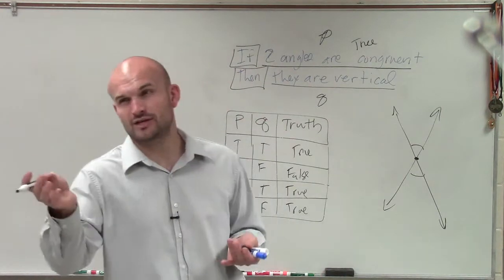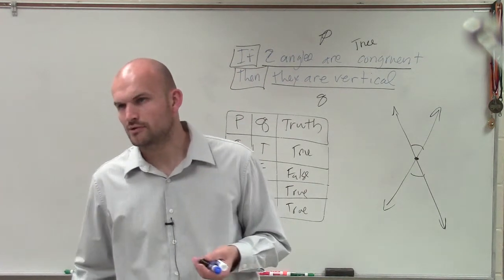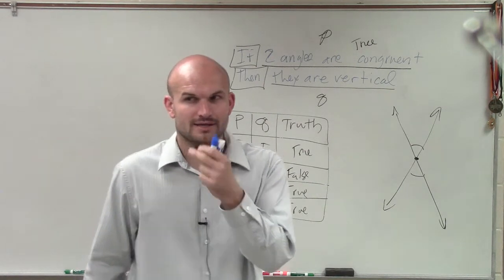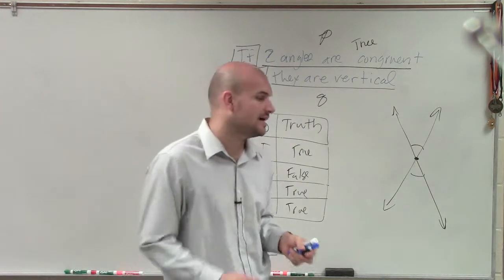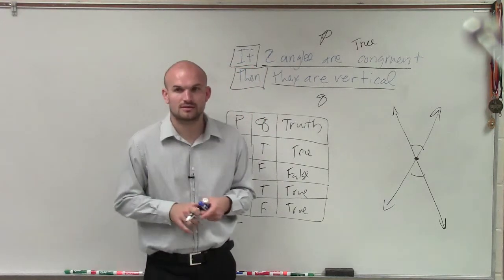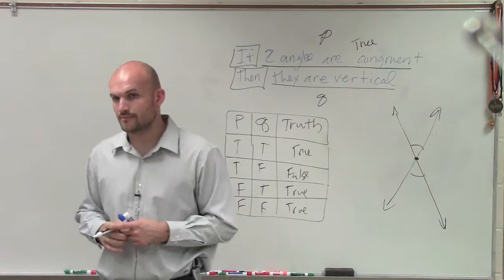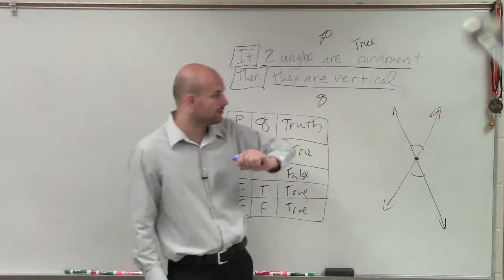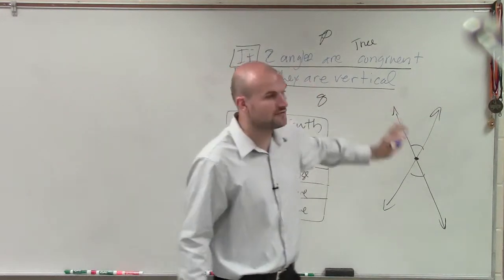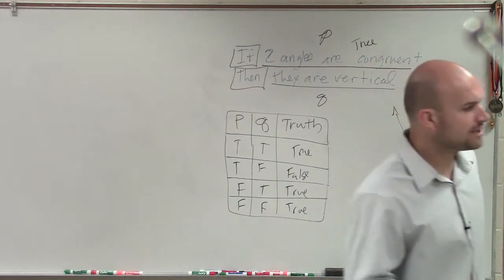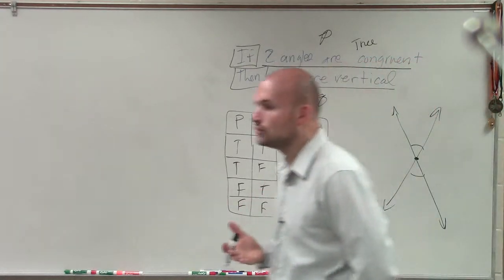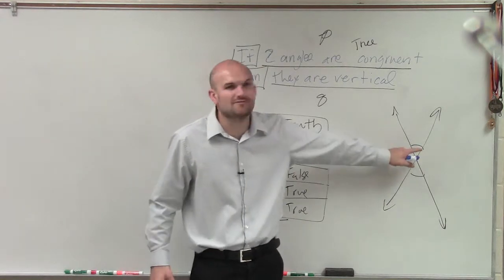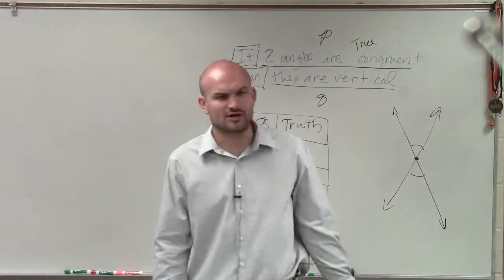Vertical angles share a vertex, but they don't share a side. So the statement says: two angles are congruent, therefore they are vertical. If we're going to prove this false, we need to be able to show that we can create two angles that are congruent that are not vertical. Can we show that two angles are congruent that are not vertical?